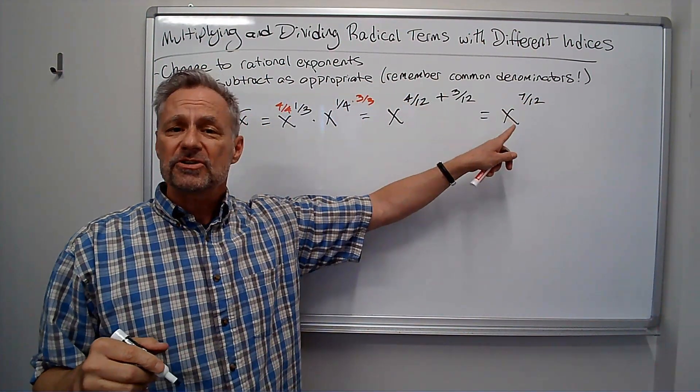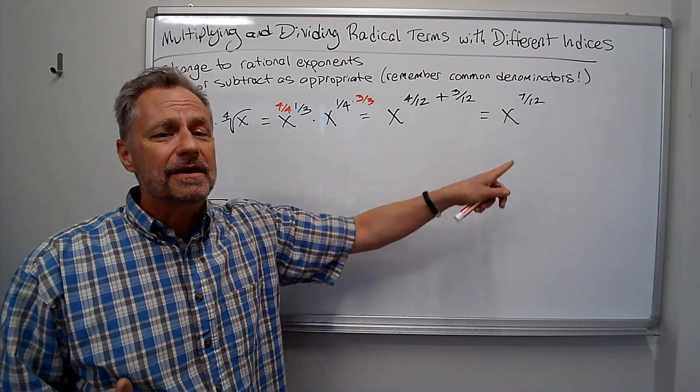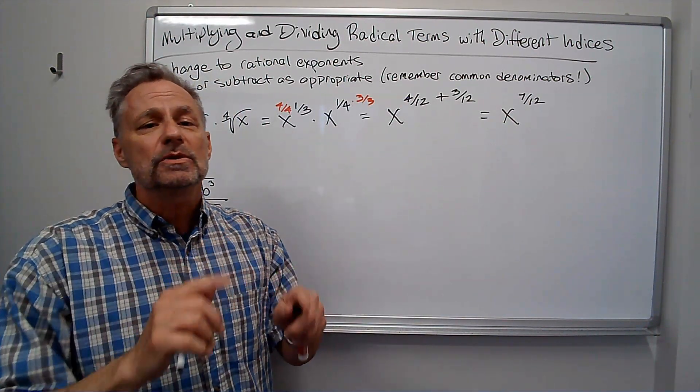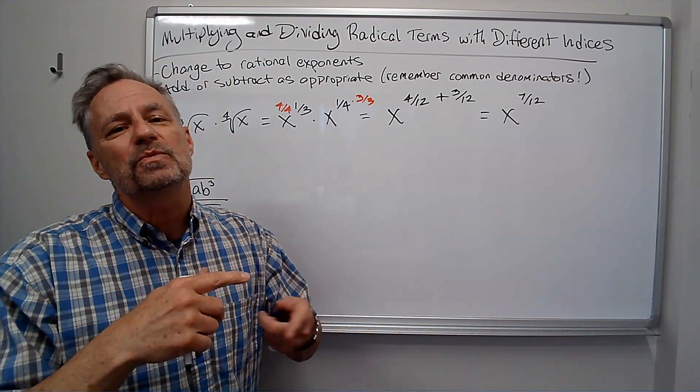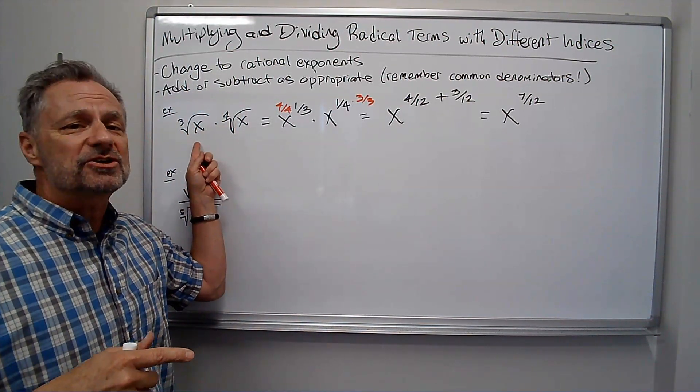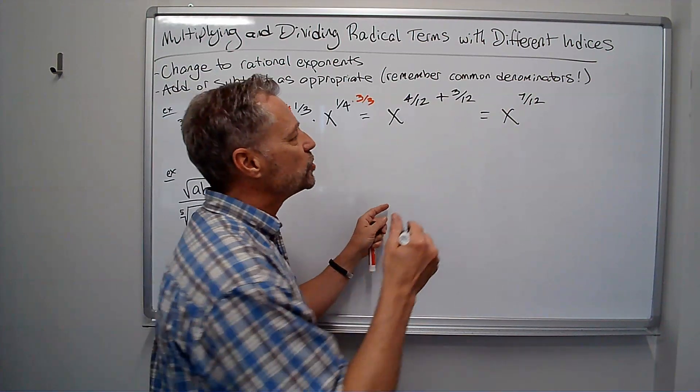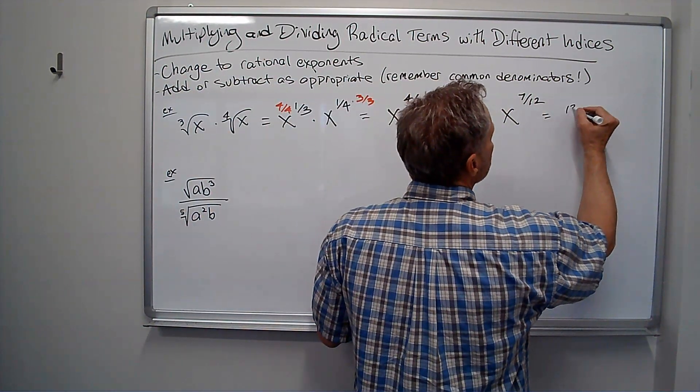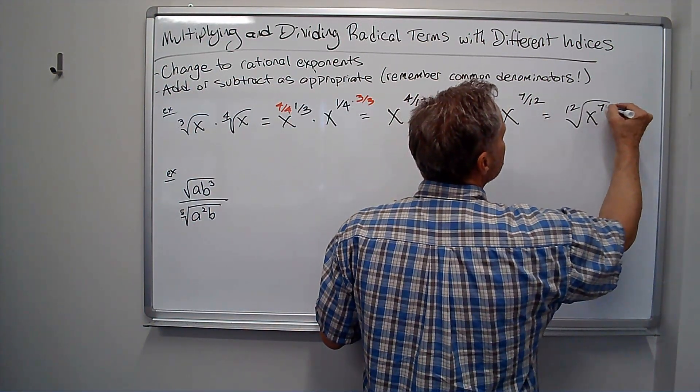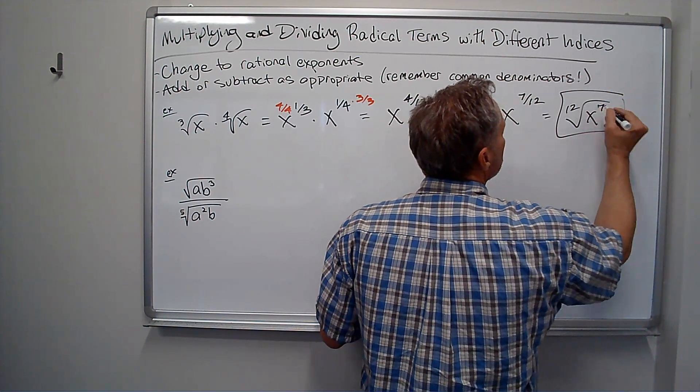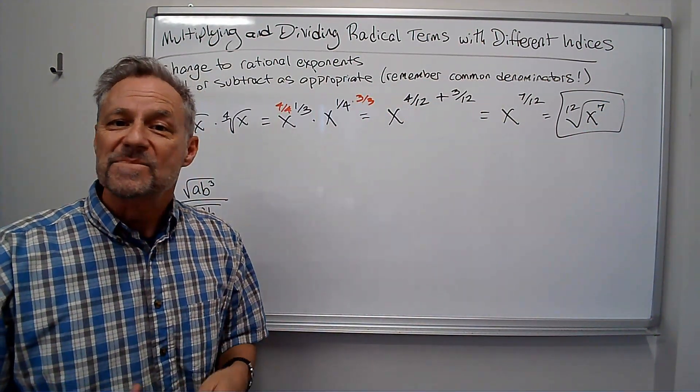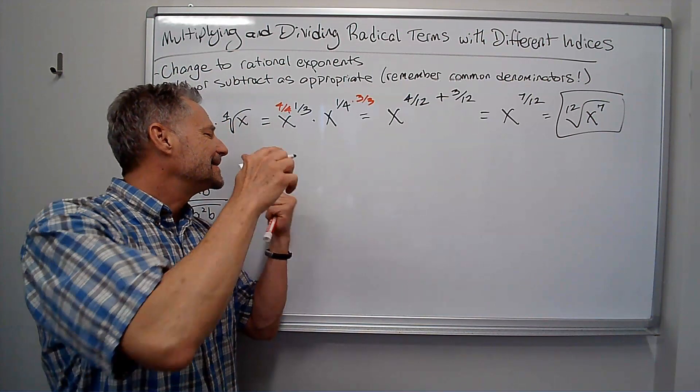And a lot of authors, a lot of instructors will be happy there. Sometimes they say, hey, don't leave a fractional or rational exponent. We still want it. We started in terms of radicals. Let's end in terms of radicals. Well, remember that twelve means the twelfth root, so we'll do the twelfth root of x to the seventh. And that's our answer. So it's like that. Let's try another one.